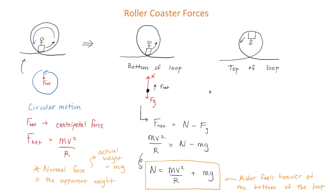We draw a free body diagram. We have the force of gravity pushing down on the rider, but we also have the normal force pointing down as well. This is where a lot of people get confused, because we're used to the normal force pointing up.